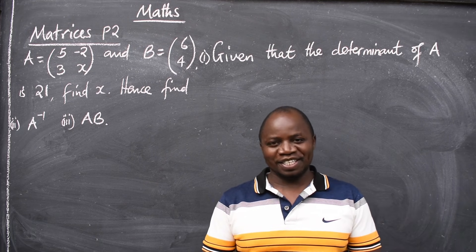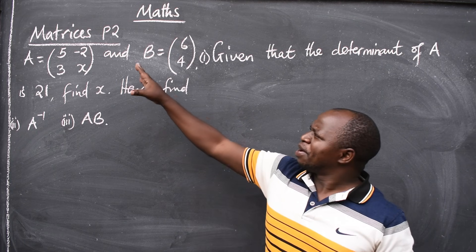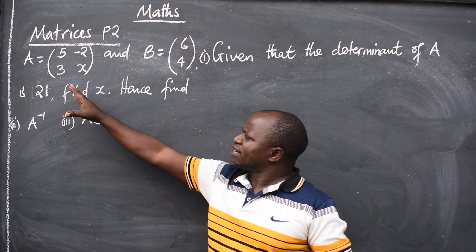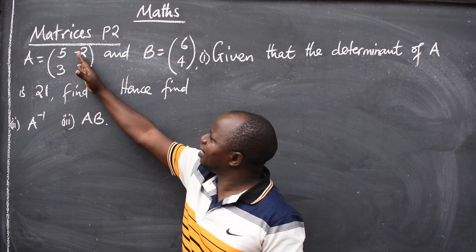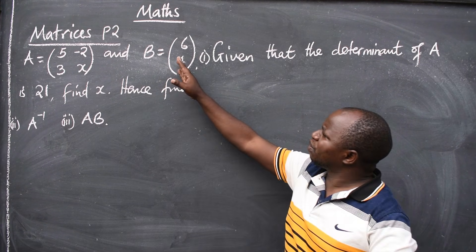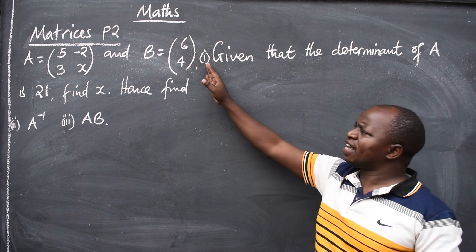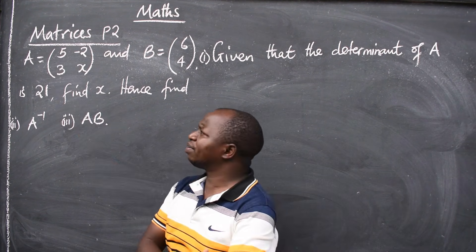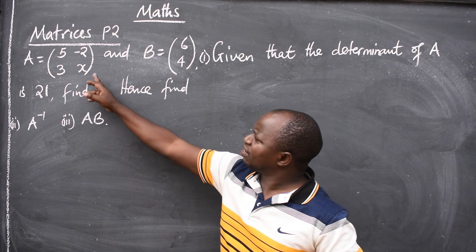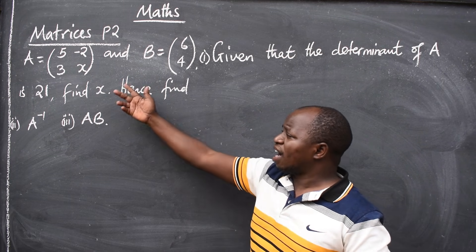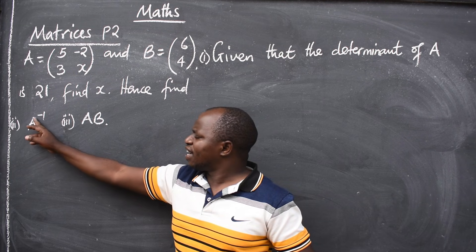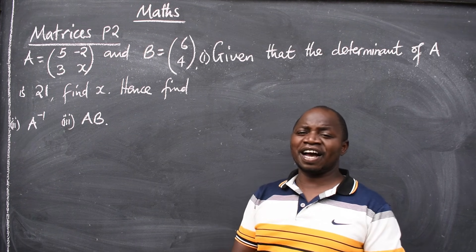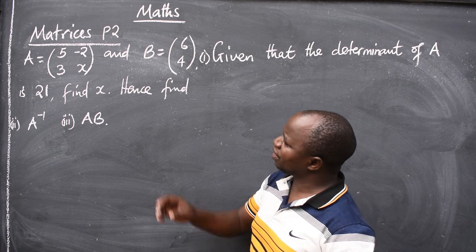Hello ladies and gentlemen, it's mathematics, and we want to look at a matrix question, paper 2. The question says matrix A is equal to [5, -2, 3, x] and B is equal to [6, 4]. The first part says, given that the determinant of matrix A is 21, we have to find x. Then, after finding the value of x, we should find the inverse of A and AB.